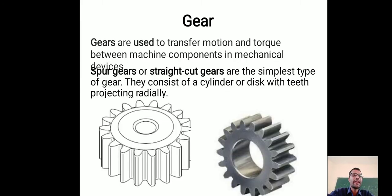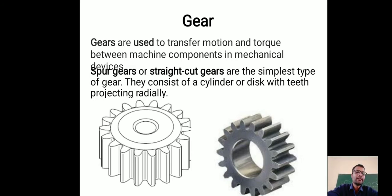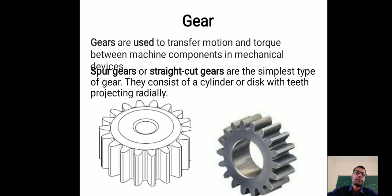Today we are going to discuss gears. In front of us, a 2D and 3D diagram is visible. As you can see, it is a gear. Simply put, a gear is a power transmission device — it transmits power and motion from one component to another component of a mechanical system. The purpose of a gear is to transmit motion between different machine components of a mechanical system.